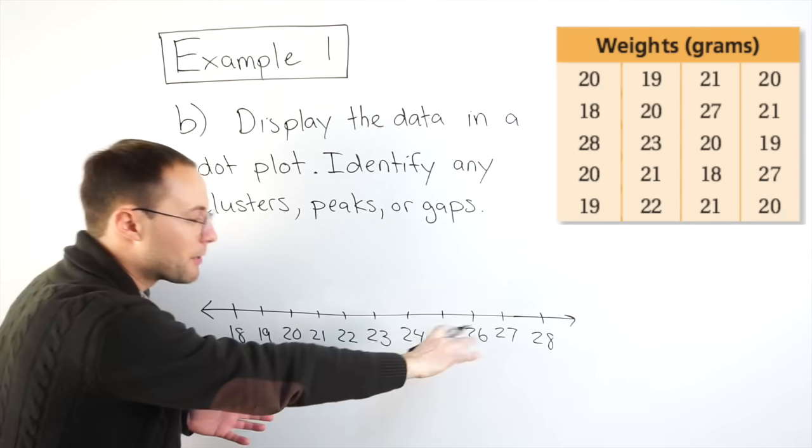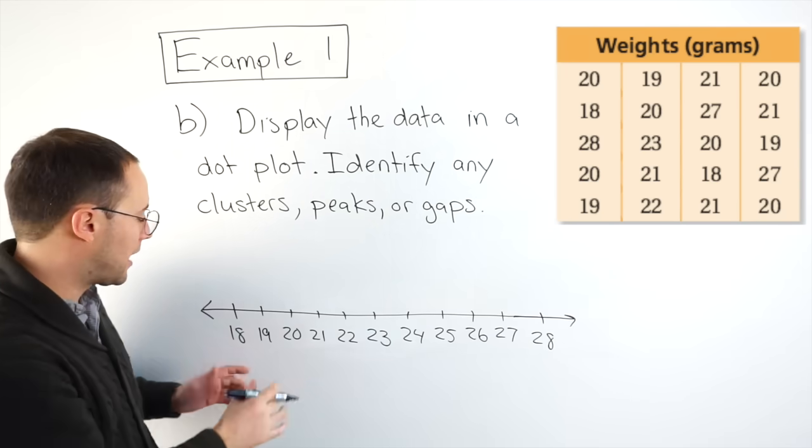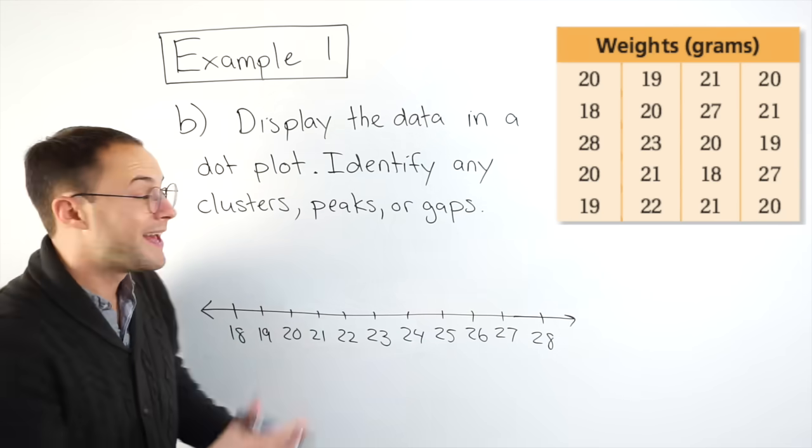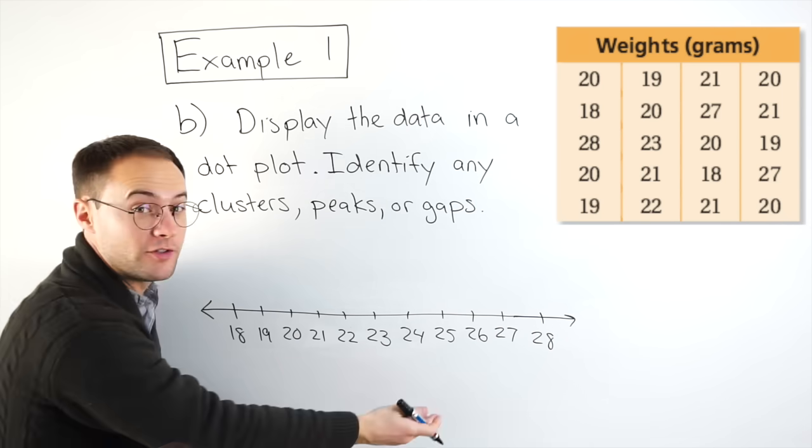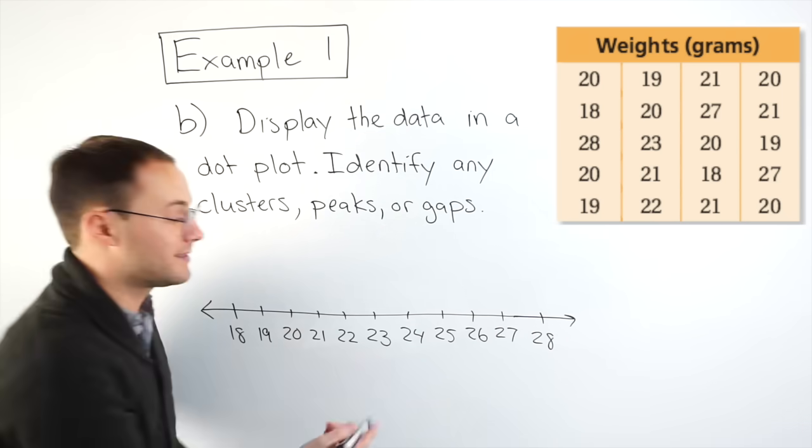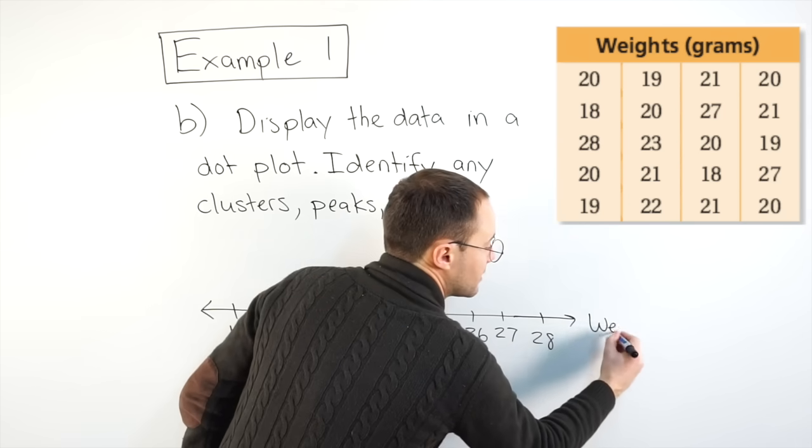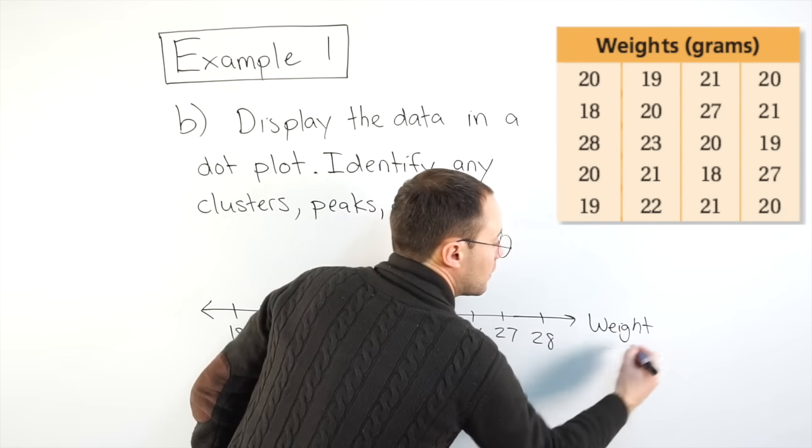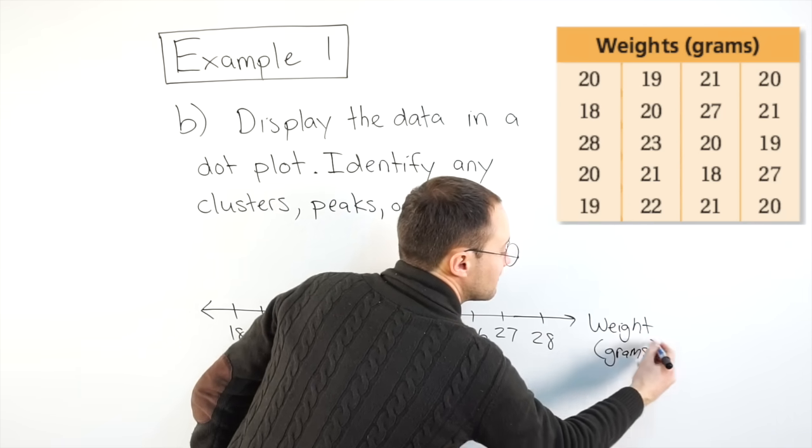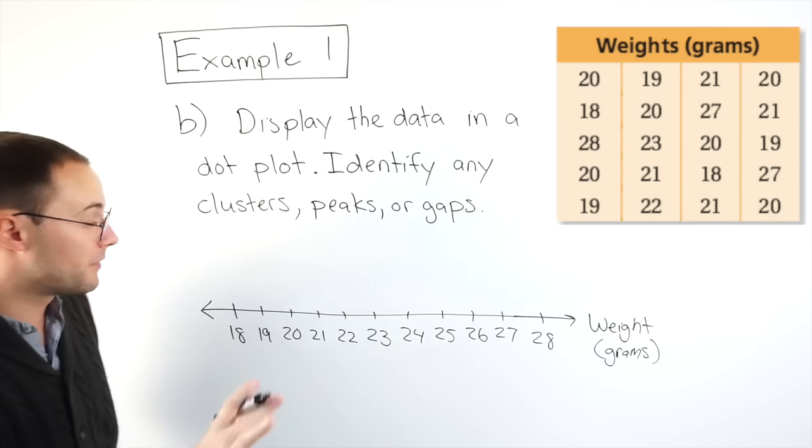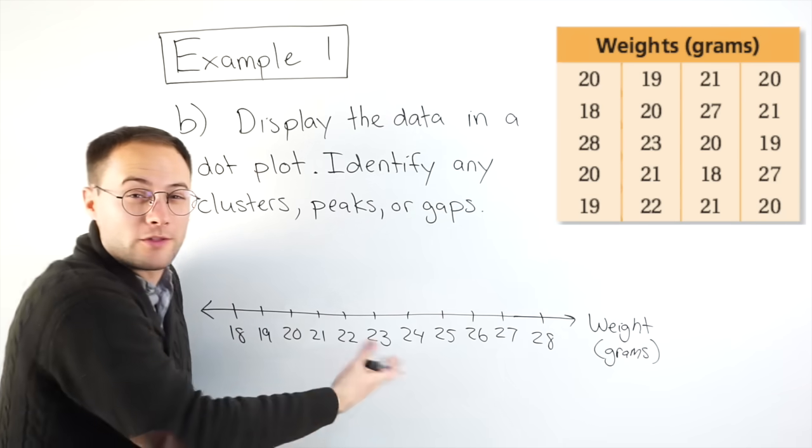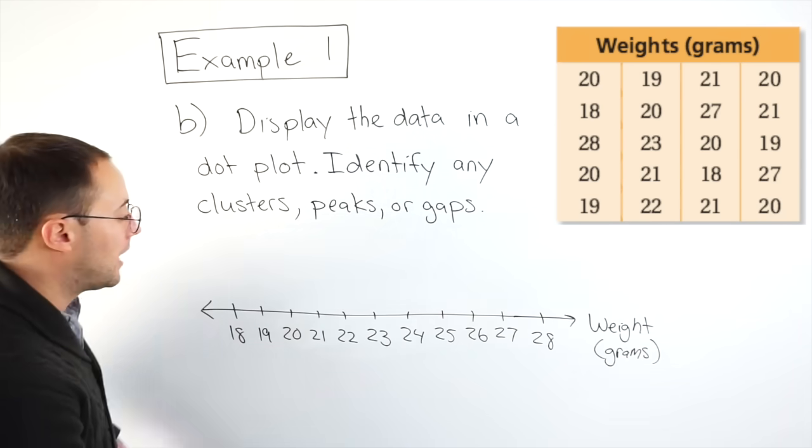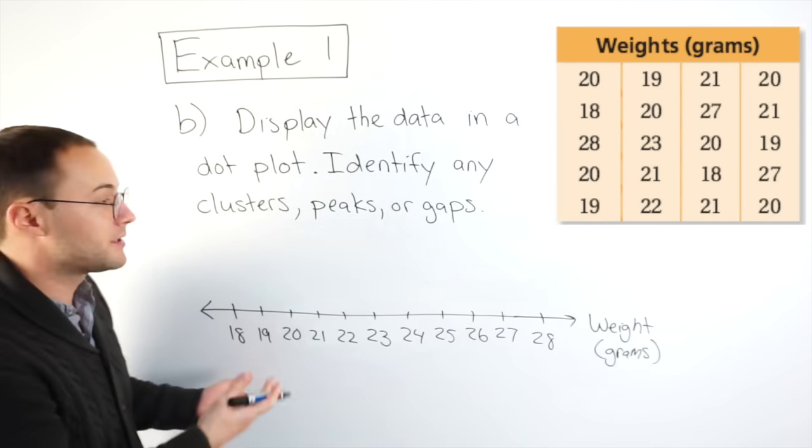Okay, so I have my number line done for my dot plot all the way from 18 to 28. I need to label what these values mean. So these were all weight. So I'm going to label that over here to the side. Weight, and that was in grams. Really important to label. Don't forget that or else nobody's going to know what those values represent.